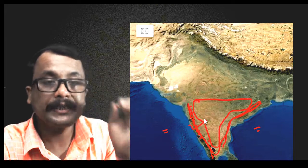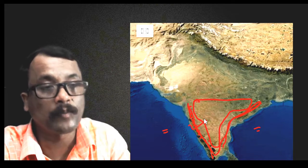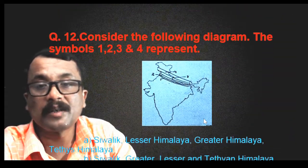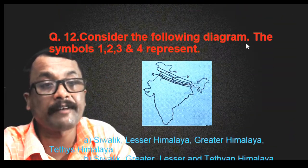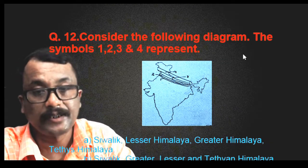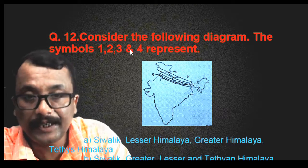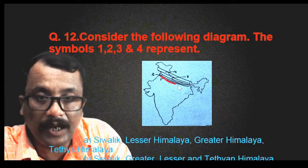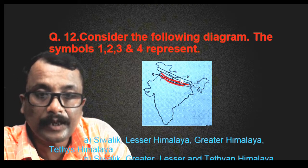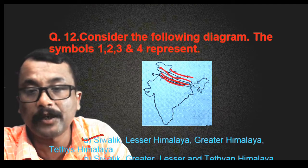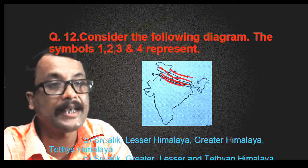Question number twelve is a picture-based question. From the diagram, the symbols 1, 2, 3, and 4 represent the Himalayan ranges. As we learned earlier, from south to north: 1 is Siwalik, 2 is Lesser Himalayas, 3 is Greater Himalayas, and 4 is Tethys Himalayas. Option A is the correct answer.